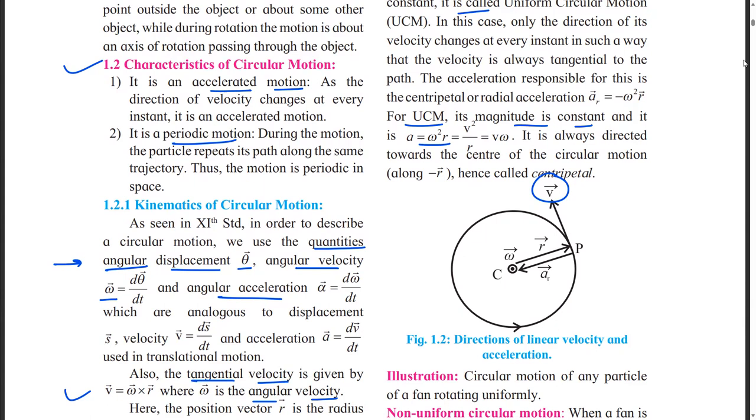And we know that omega is equal to V upon R. So if we put that value, then we are getting another two formulas. A is equal to V square upon R, that is V omega. And its direction is toward the center. Are you getting? Yes. In the diagram they have given. Its direction is toward the center, so it's called centripetal force.